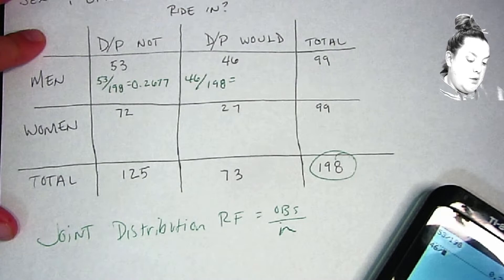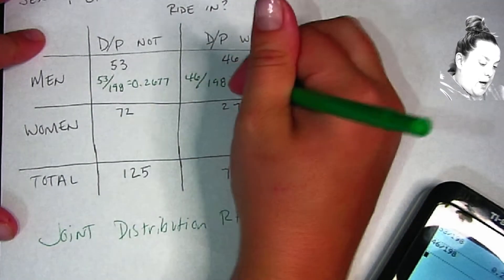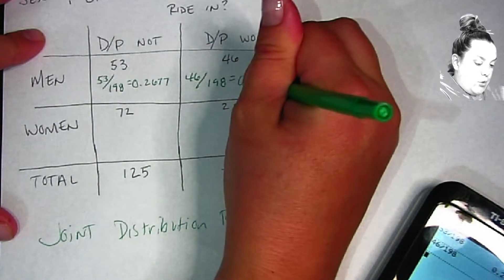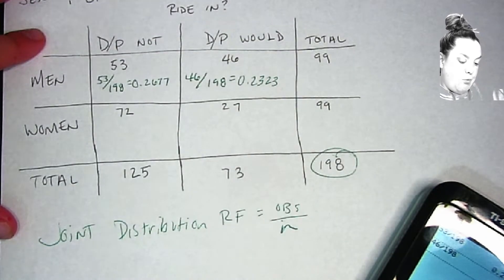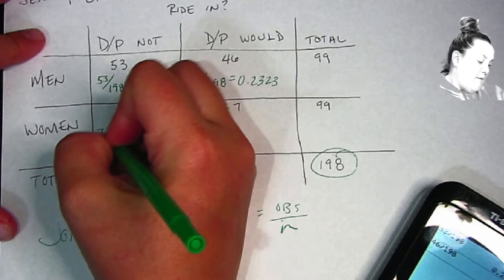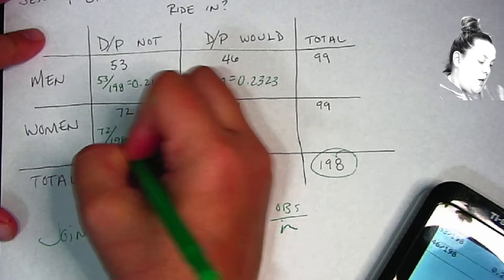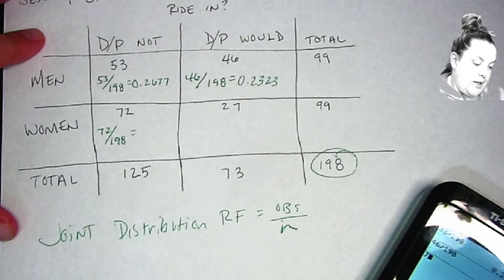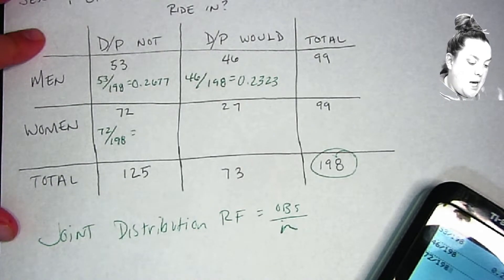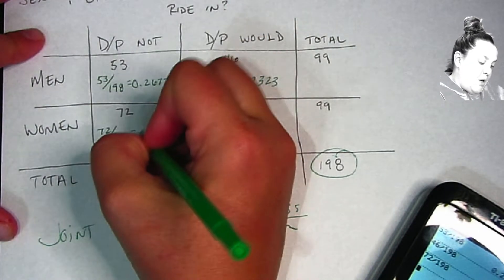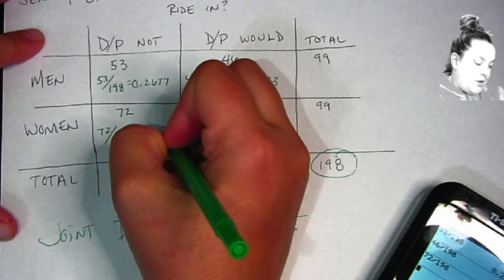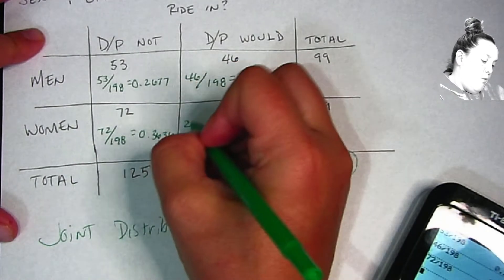Then we'll move down to the women, and they have 72 who definitely or probably would not. That would be 72 divided by 198, and that gives me 0.3636. And then finally we have 27.